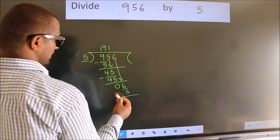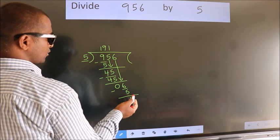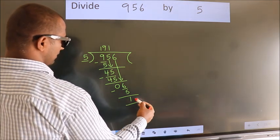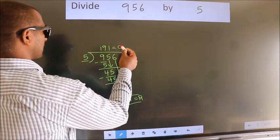Now we subtract. We get 1. No more numbers to bring down. So we stop here. This is our remainder. This is our quotient.